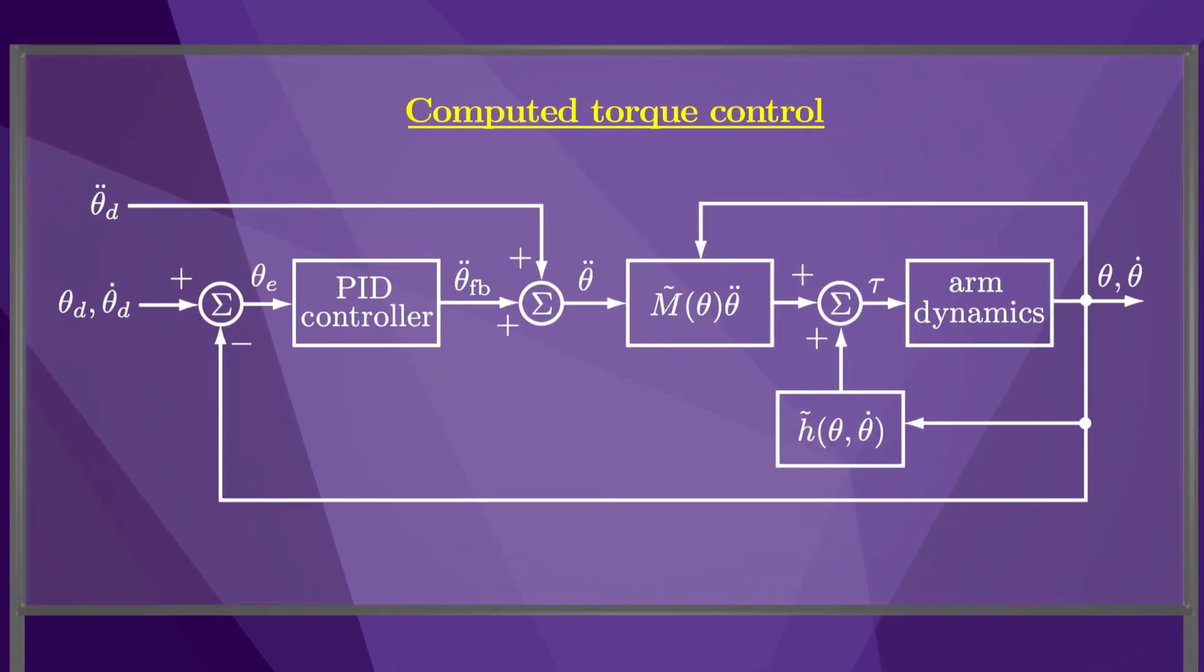This is a block diagram of the computed torque controller. The measured position and velocity of the robot feed back to the PID controller, to the calculation of the M tilde matrix, and to the calculation of the H tilde vector. This controller provides good performance when the dynamic model of the robot is reasonably good.